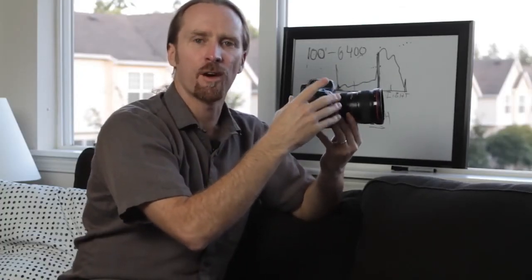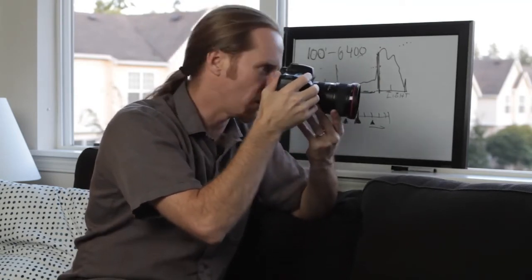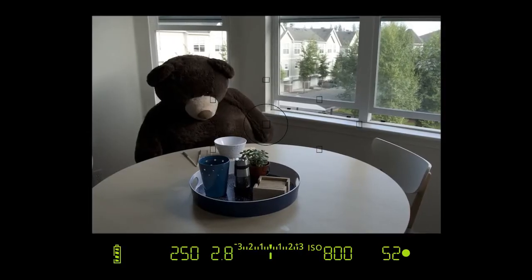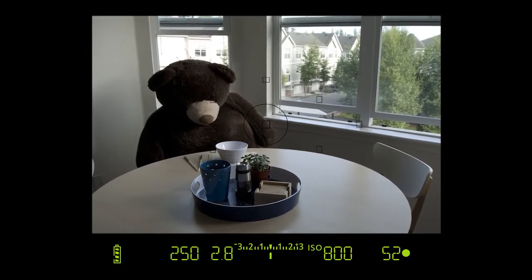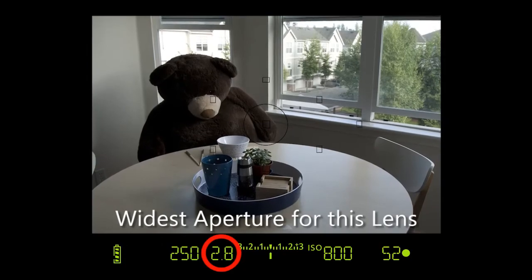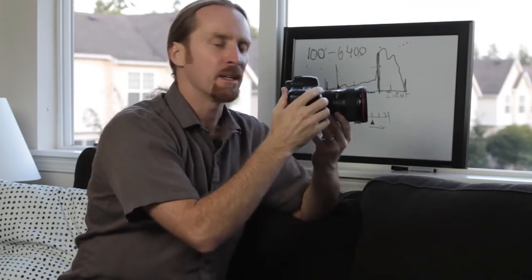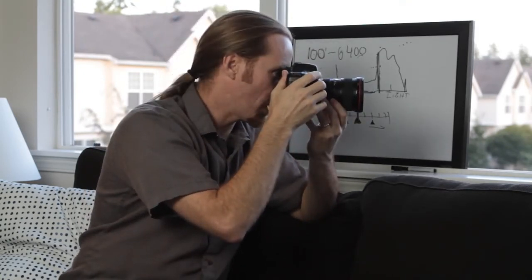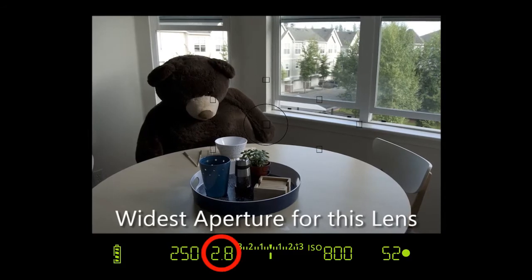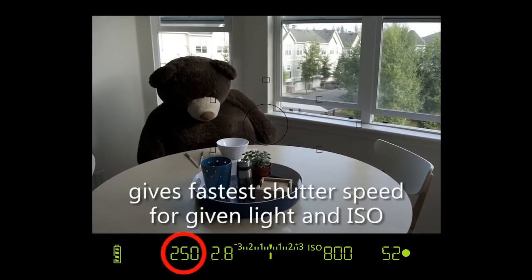And then I can open it up all the way to 2.8. Now your lens may stop at 4 or 5.6 depending on what lens you have and what zoom setting you have. What you'll notice is in a particular given situation, if you choose the widest aperture, in other words the smallest number there, that will automatically adjust the shutter speed accordingly. So the widest aperture will let the most light in, which will allow you to actually have a quicker shutter speed.